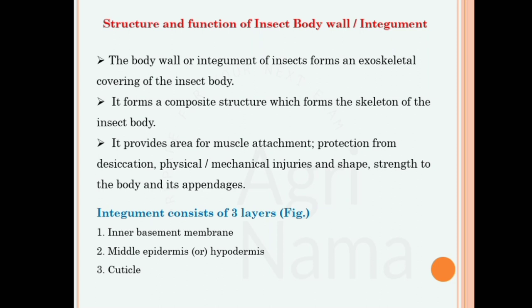The insect body wall is divided into three parts: basement membrane, epidermis, and cuticle. Basement membrane is the innermost part, after that epidermis, and then the outermost part of the insect body is cuticle.